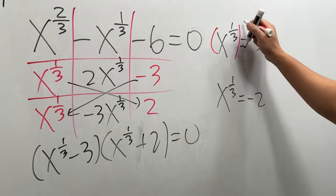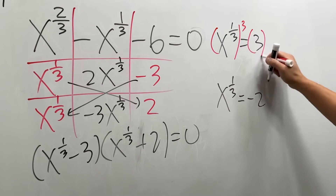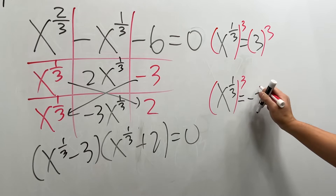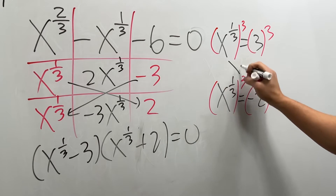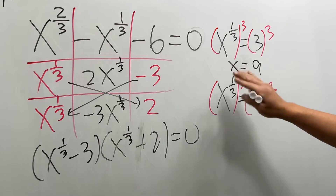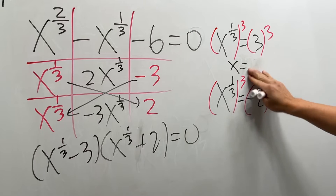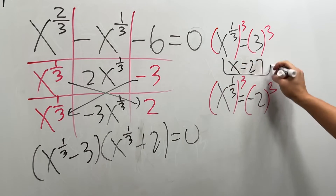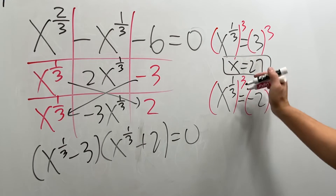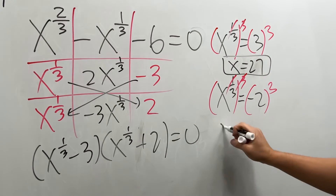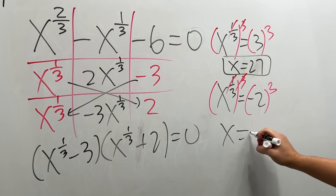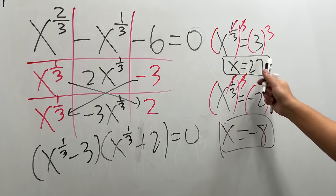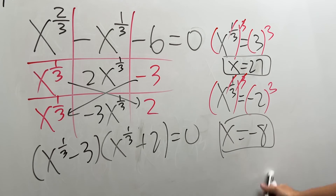Let's go ahead and raise both sides to the third power, and do the same thing for the other equation. You will see that x is equal to 3 to the third power, which is 27. And then the other answer: x equals negative 2 to the third power, which is negative 8. We are done — two answers: 27 and negative 8. That's it.